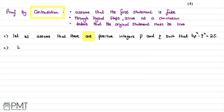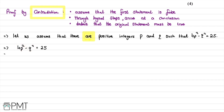We're going to work with this expression and try to solve it. We have 4P squared minus Q squared equals 25. We have two terms which are squares, so using the difference of two squares that gives us (2P + Q)(2P − Q) = 25. We can verify this by expanding the brackets.